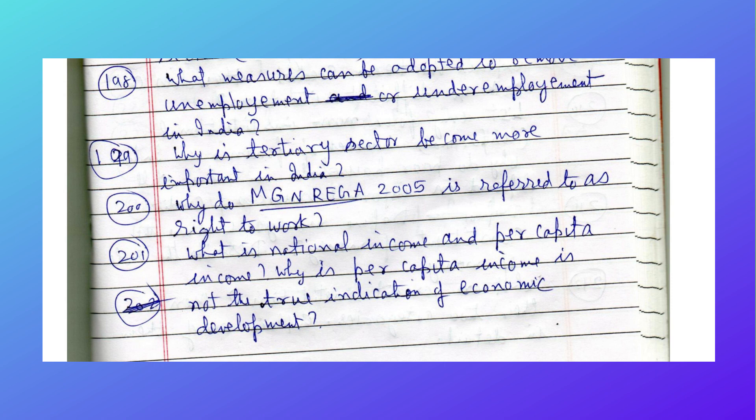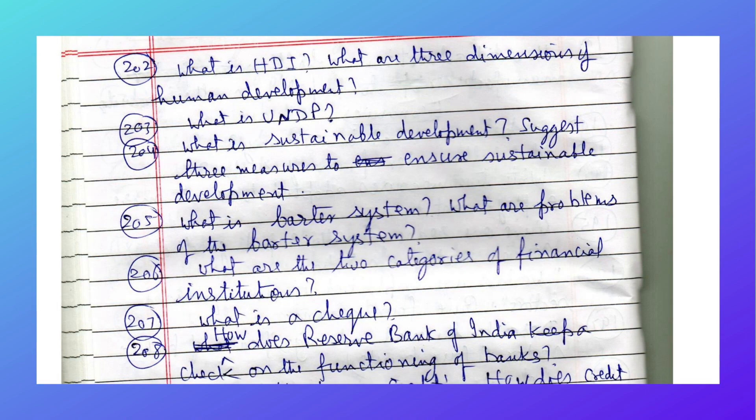What measures can be adopted to remove unemployment or underemployment in India? Why has the tertiary sector become more important in India? Why is MGNREGA 2005 referred to as the 'Right to Work'? What is national income and per capita income? Why is per capita income not a true indication of economic development? What is HDI? What are the three dimensions of human development?